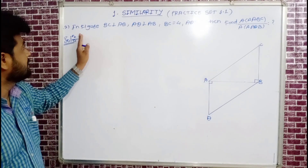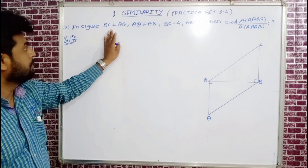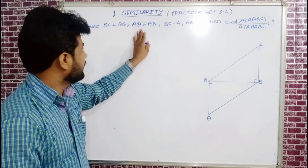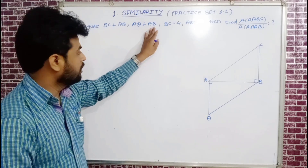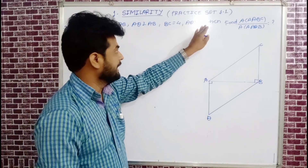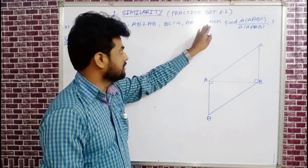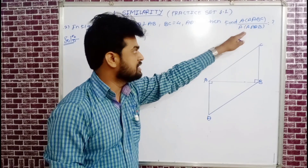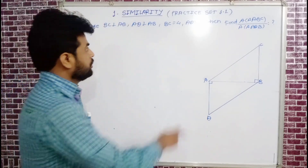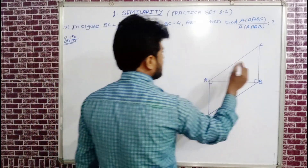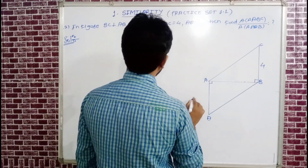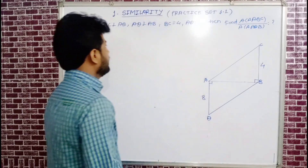Now let us see the second example. In the figure, BC is perpendicular to AB and AD is perpendicular to AB. BC = 4 and AD = 8. Find the ratio of area of triangle ABC to area of triangle ADB.